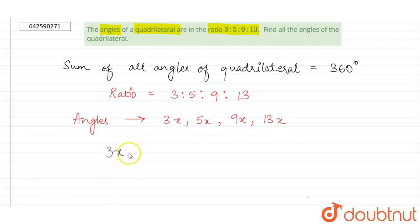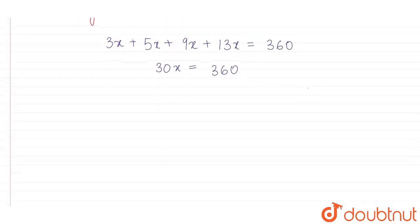Now 3x plus 5x plus 9x plus 13x equals to 360. So 30x is equal to 360.